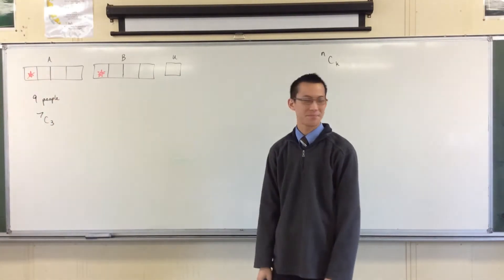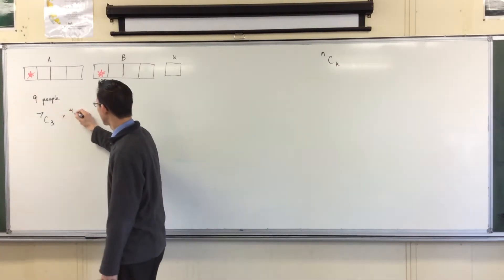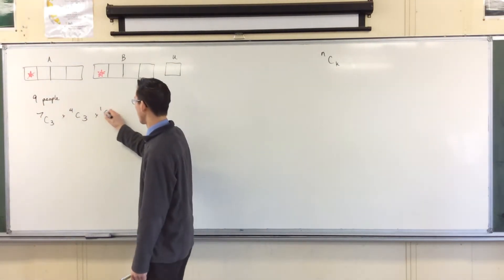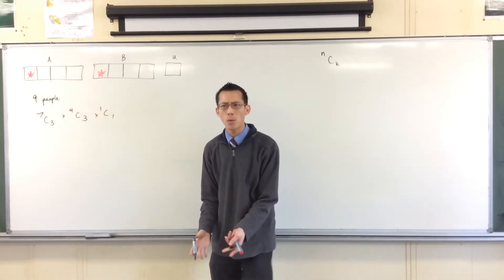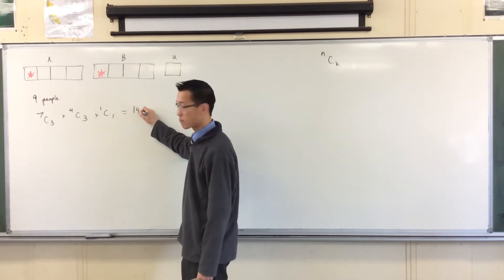And then what happens to fill the next team? Four, choose three again. And then you've got the loner who ends up umpiring. One choose one. Now do you remember what number we got for that? 140.